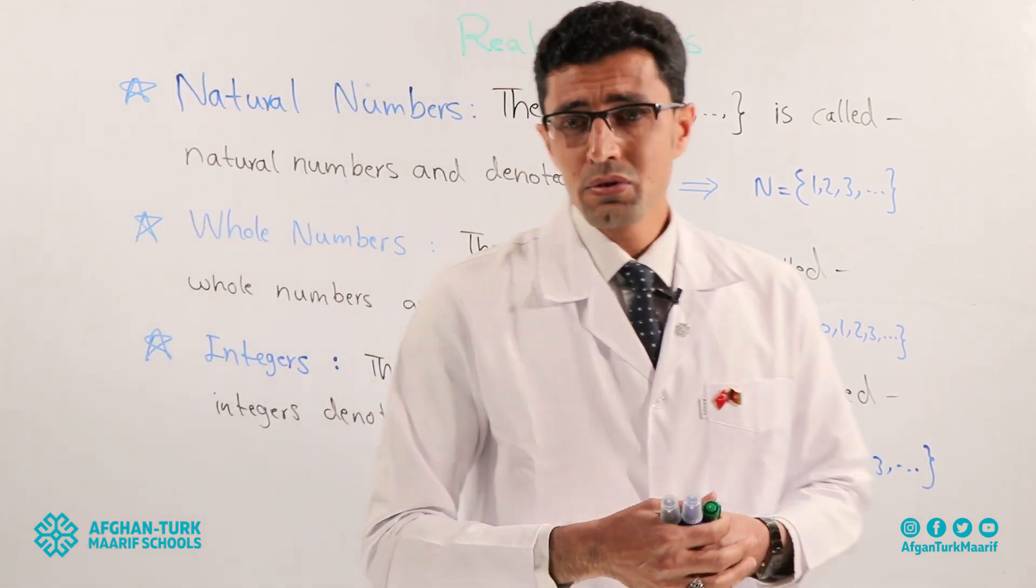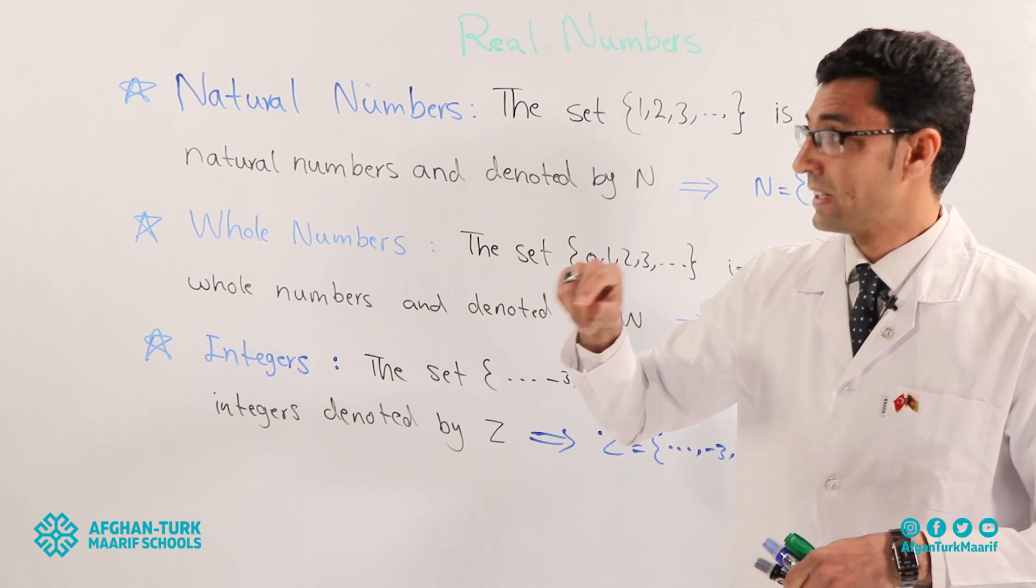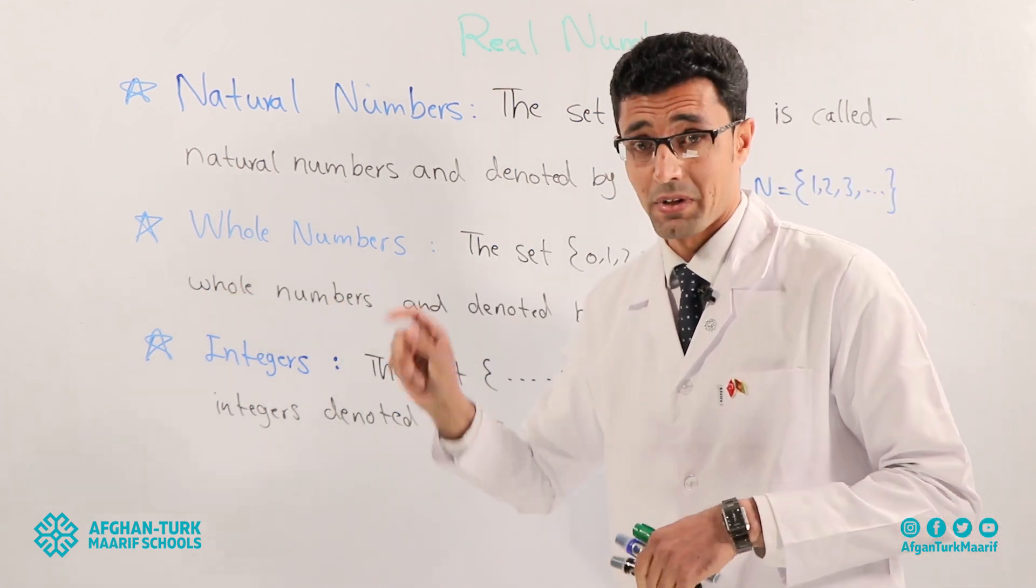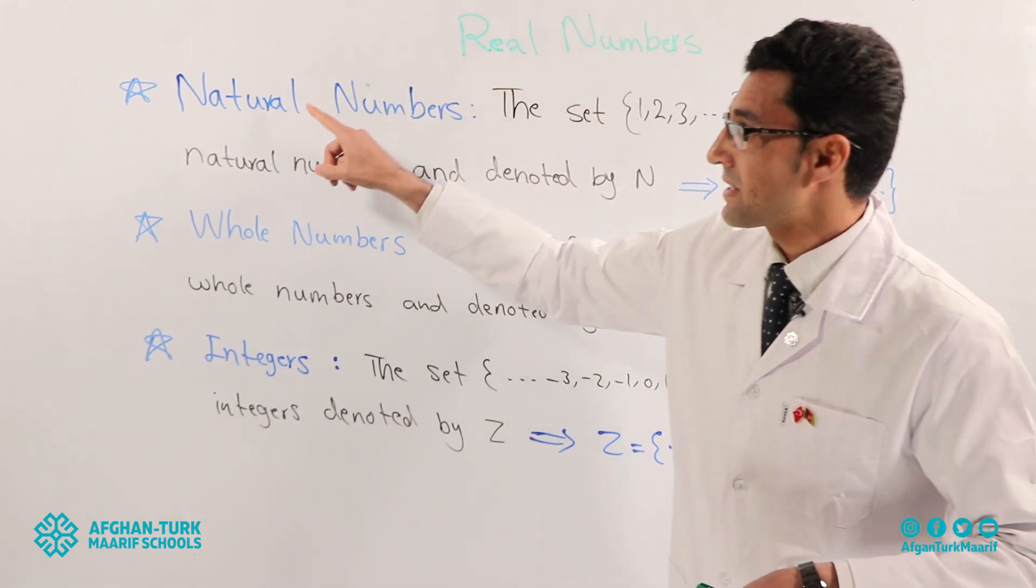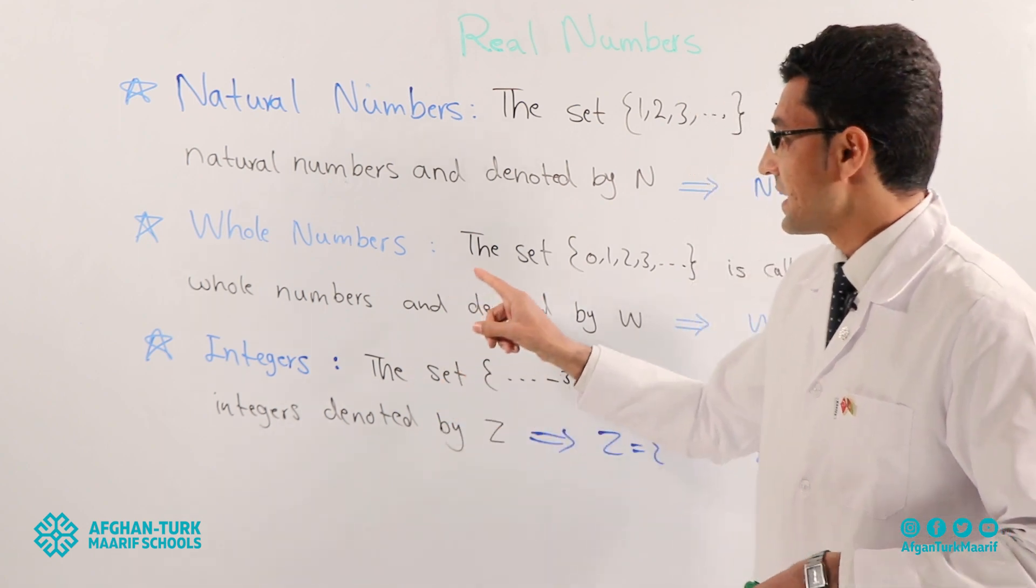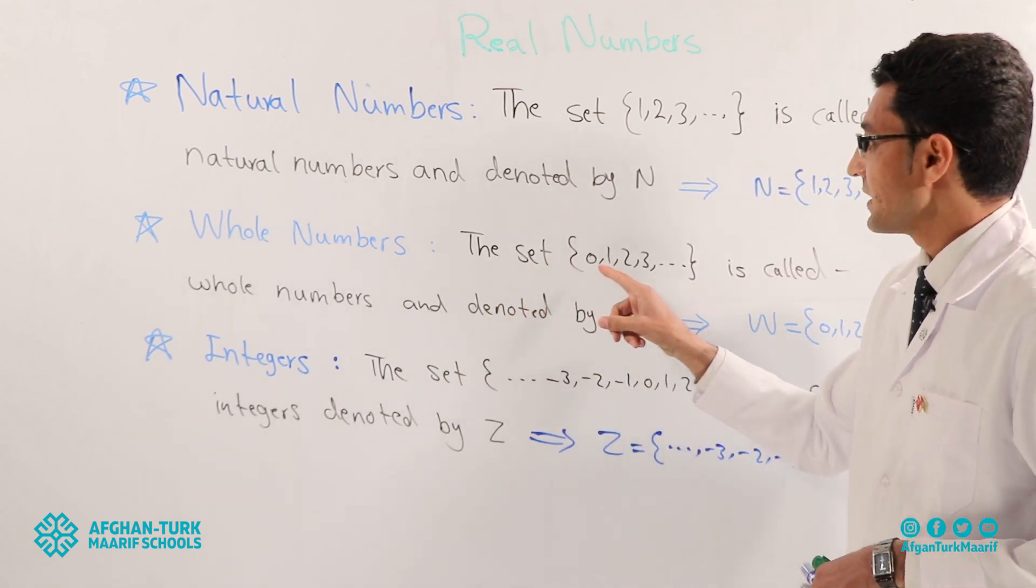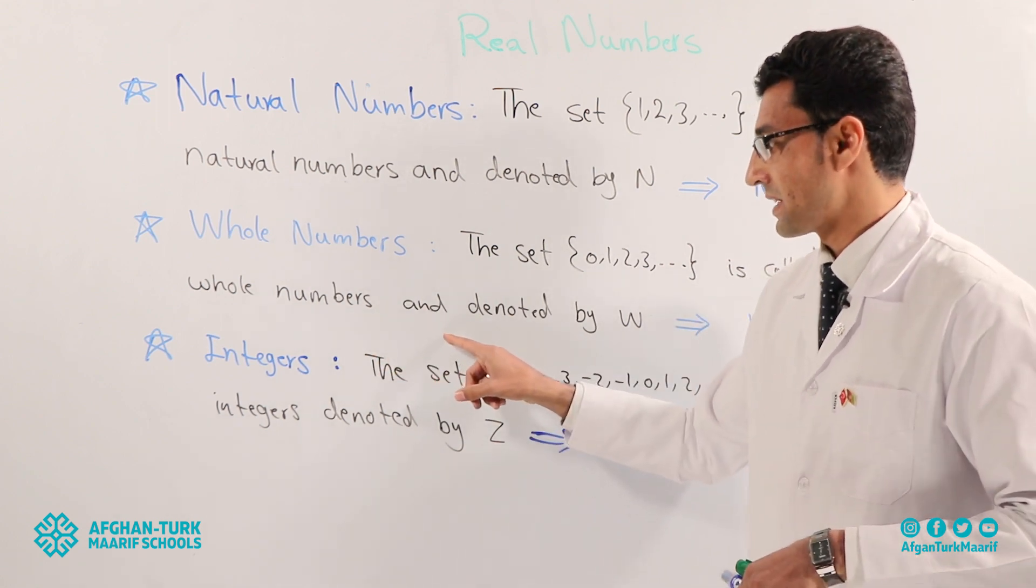Okay? Now. Let me to talk about the other numbers. What is that? Whole numbers. In order to understand real numbers we must know natural number. We must know whole numbers. The set zero, one, two, three is called whole numbers.